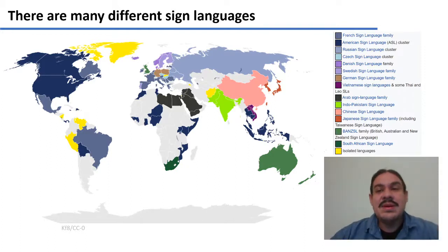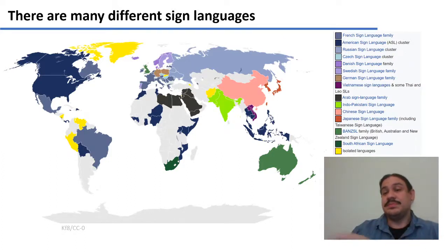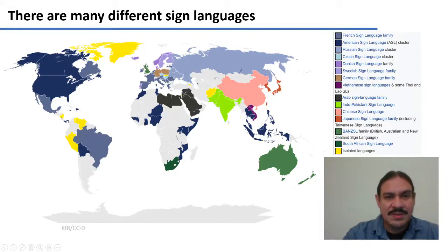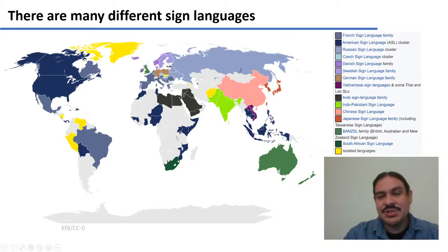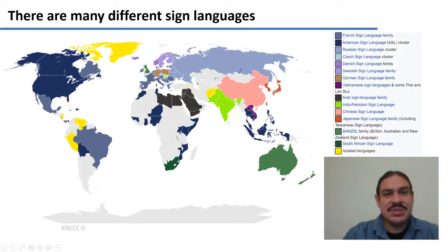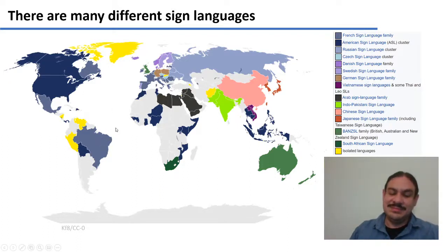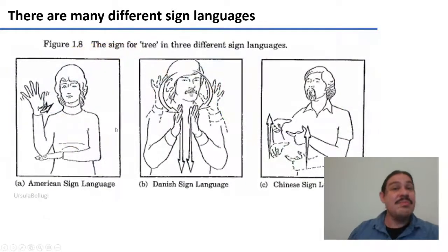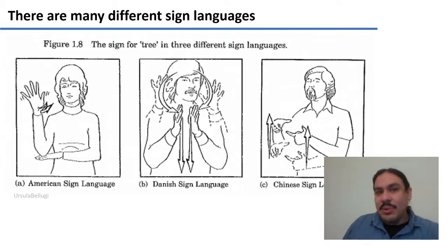As you can see in this map, there are many sign language families, just as there are spoken language families. For example, here in Britain we have British Sign Language, which is related to the sign languages in Australia and New Zealand. We also have French Sign Language, which is related to sign languages spoken in Spain and in some parts of Latin America.